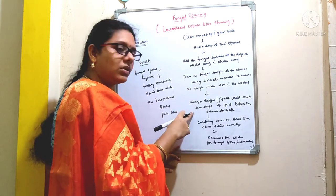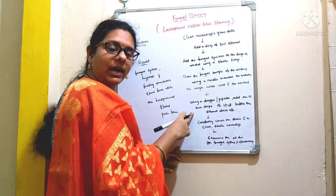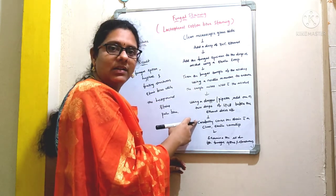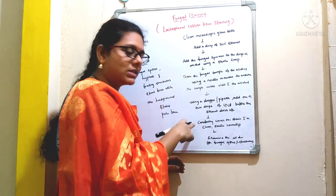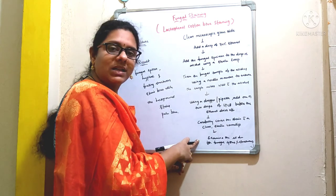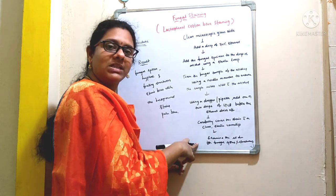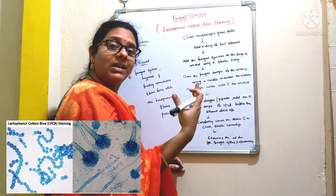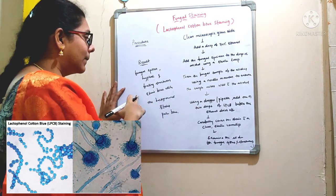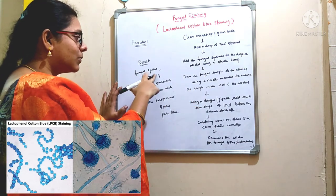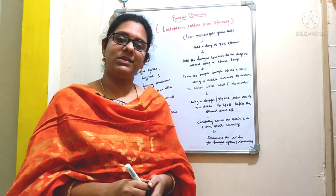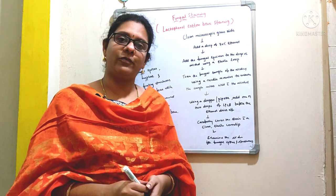Once you have added the lactophenol cotton blue dye, take a clean sterile cover slip and place it on top of the stain to cover it. Now you are ready to examine the slide under the microscope. When you observe the slide, you can examine the fungal spores and fungal structures, where you will get a result of blue-colored fungal spores, hyphae, and fruiting structures, while the rest of the background stains pale blue.